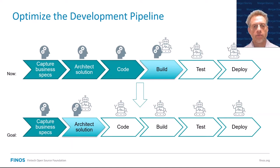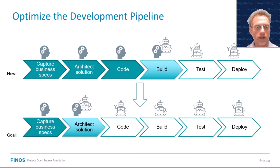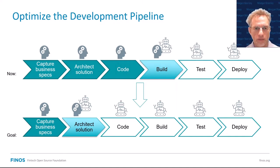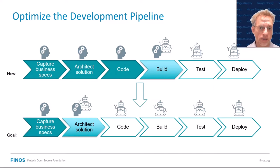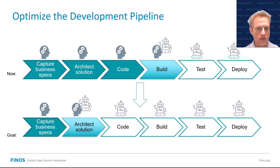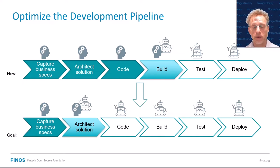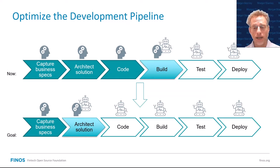What does that look like in the bigger scheme of software development? Right now you probably have a flow where you work with the business to come up with specifications, you architect a solution, then you code up the business logic into that solution, and then you've got the regular build-test-deploy cycle. The first three steps are very manual in the current flow. What we want to do is minimize as much manual effort as possible — get the business specs together as the only manual process. If you think about it, that should be the only manual process, and then everything else we can automate.